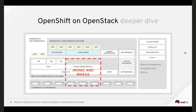Ironic — bare metal as a service. Ironic is installed as part of OpenStack. In the same way you have compute nodes running KVM as a hypervisor, Ironic runs on the controllers and manages the bare metal nodes directly, without a hypervisor on those nodes.